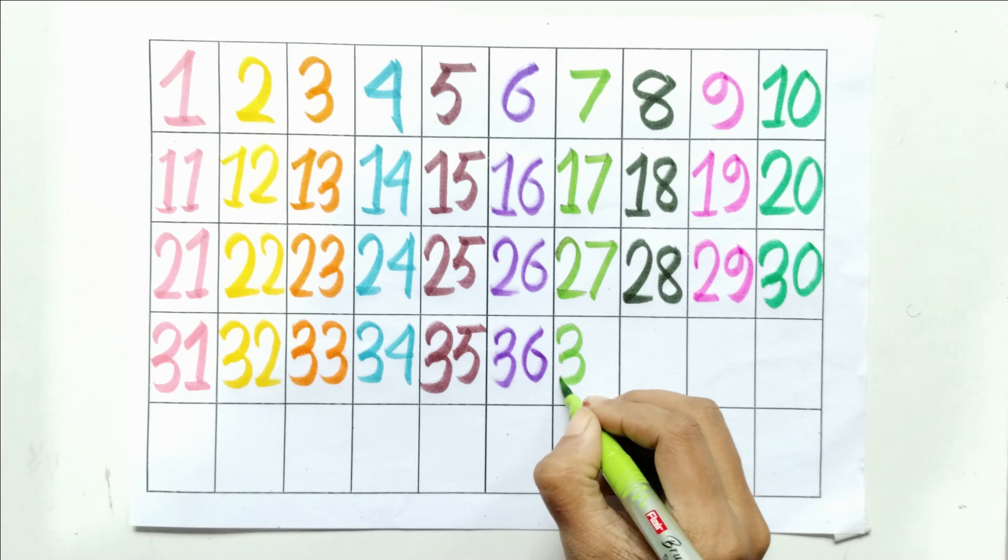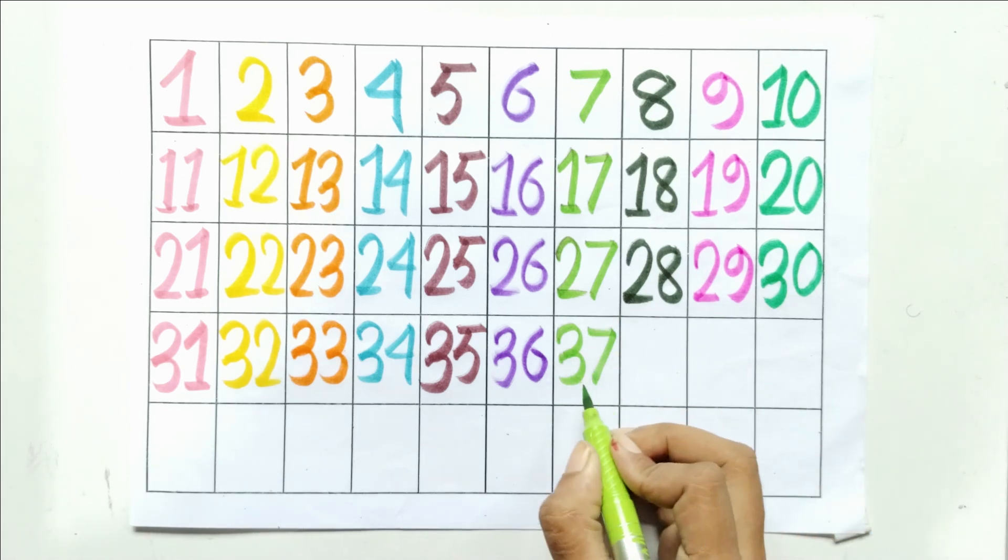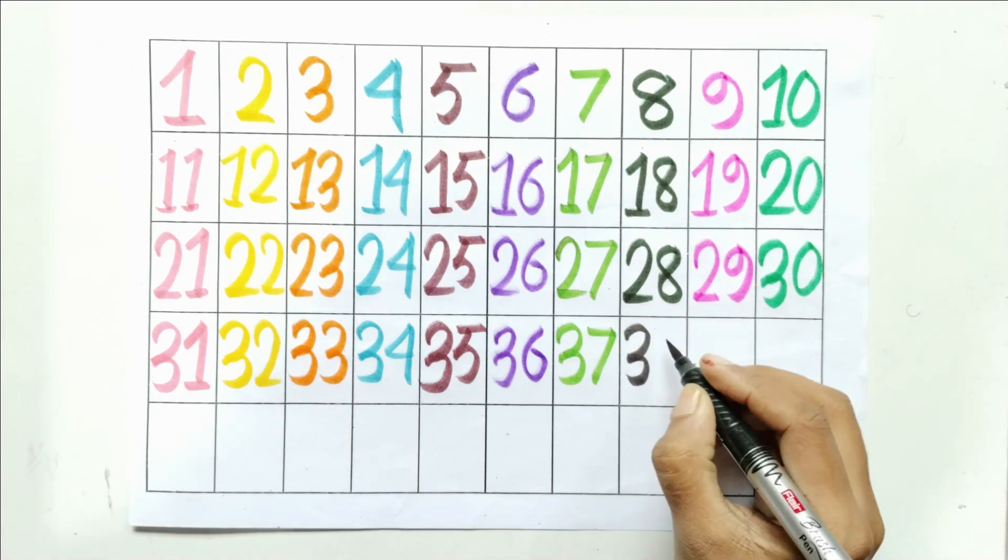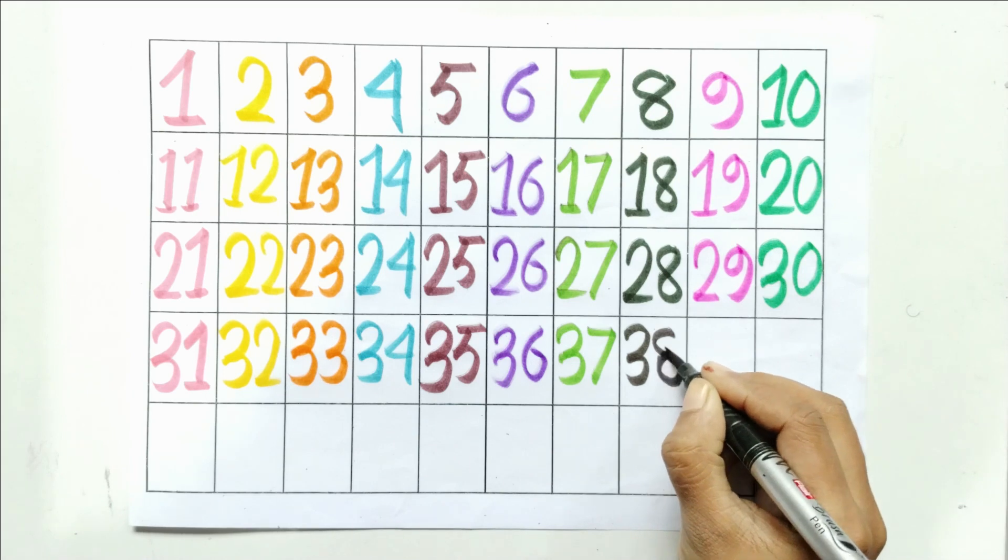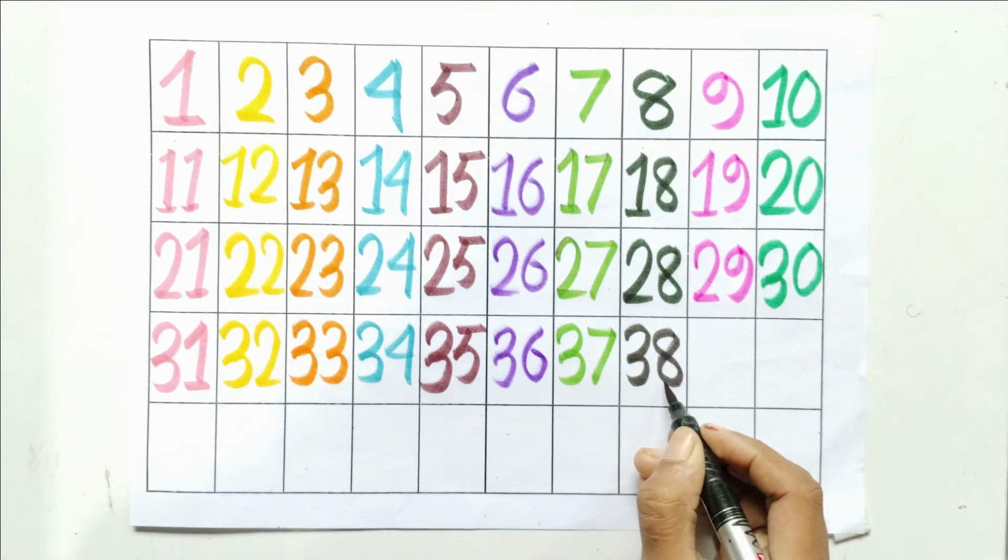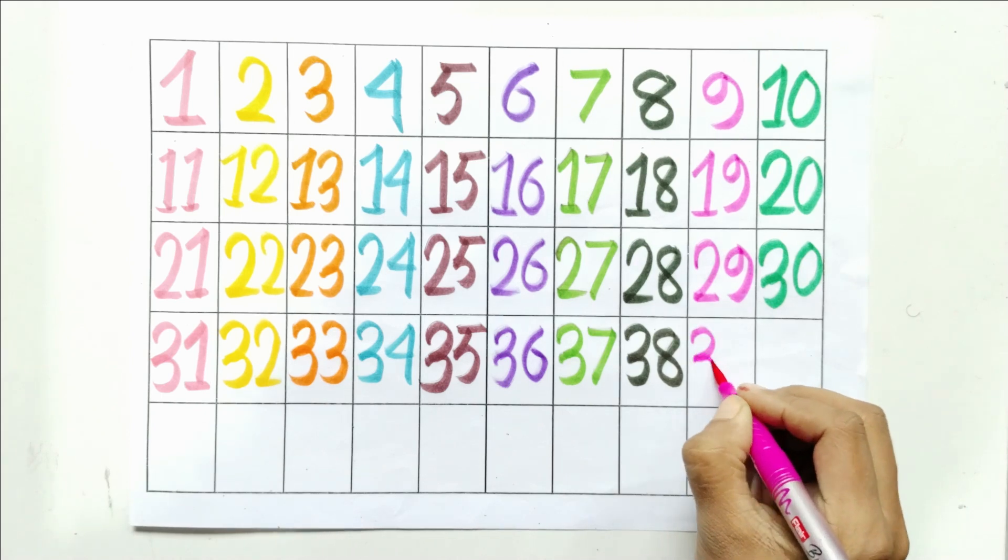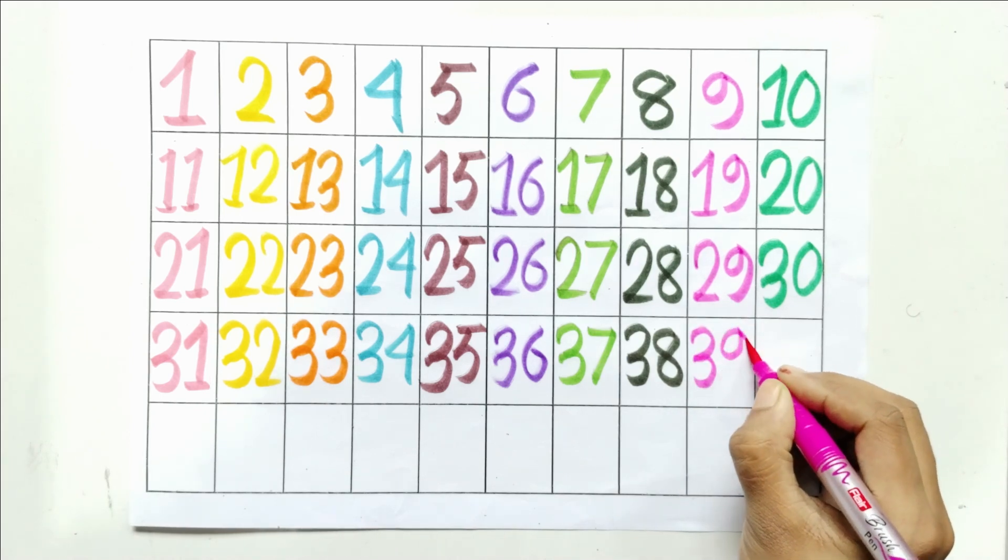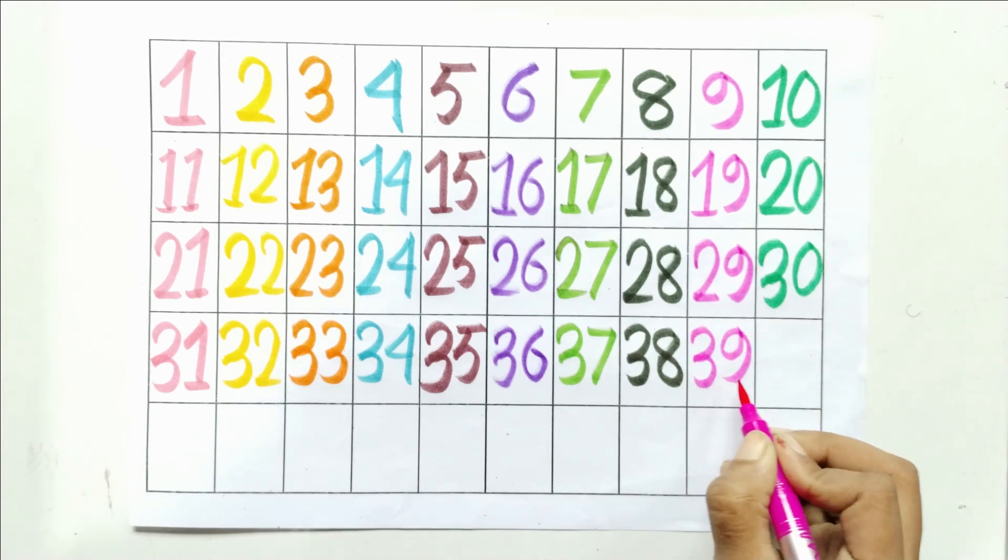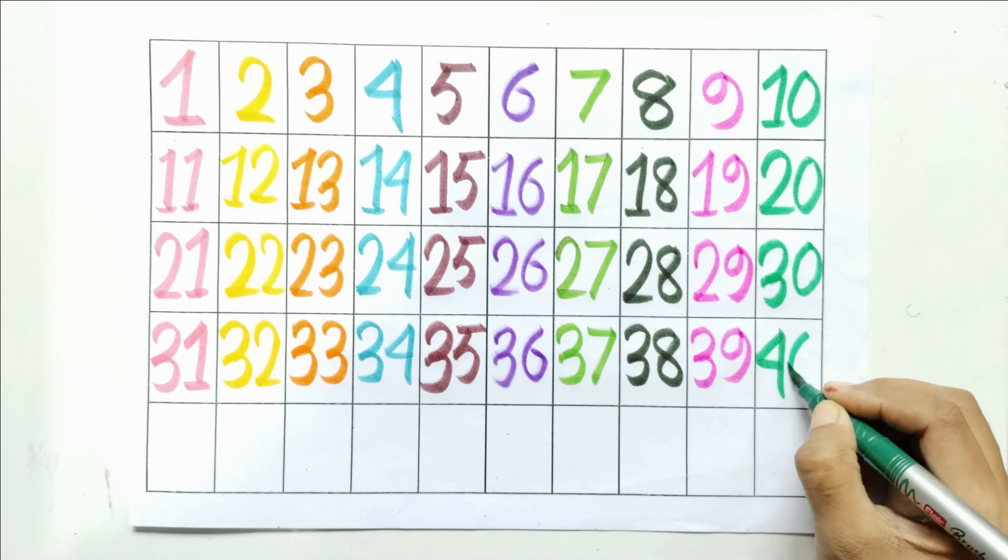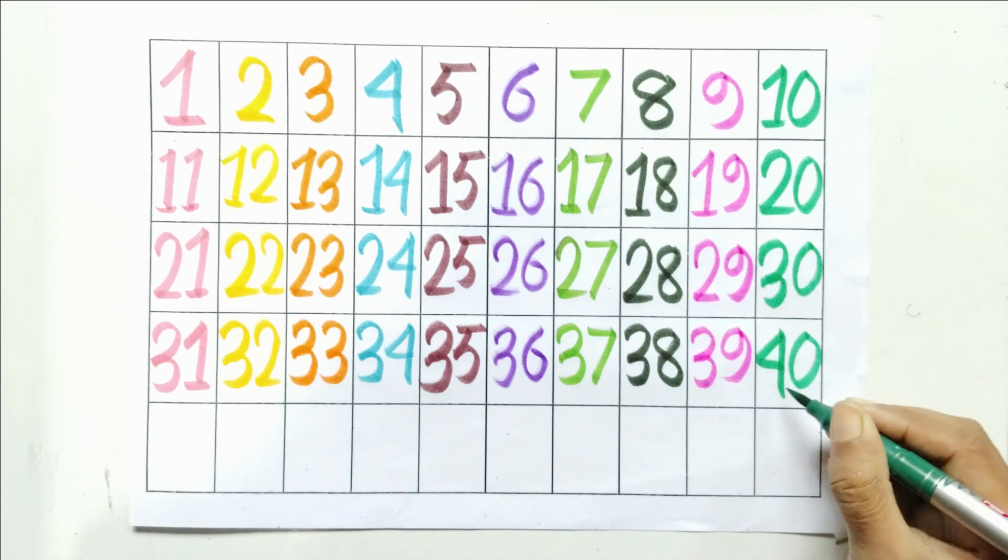Three and seven, thirty-seven. Three and eight, thirty-eight. Three and nine, thirty-nine. Four and zero, forty.